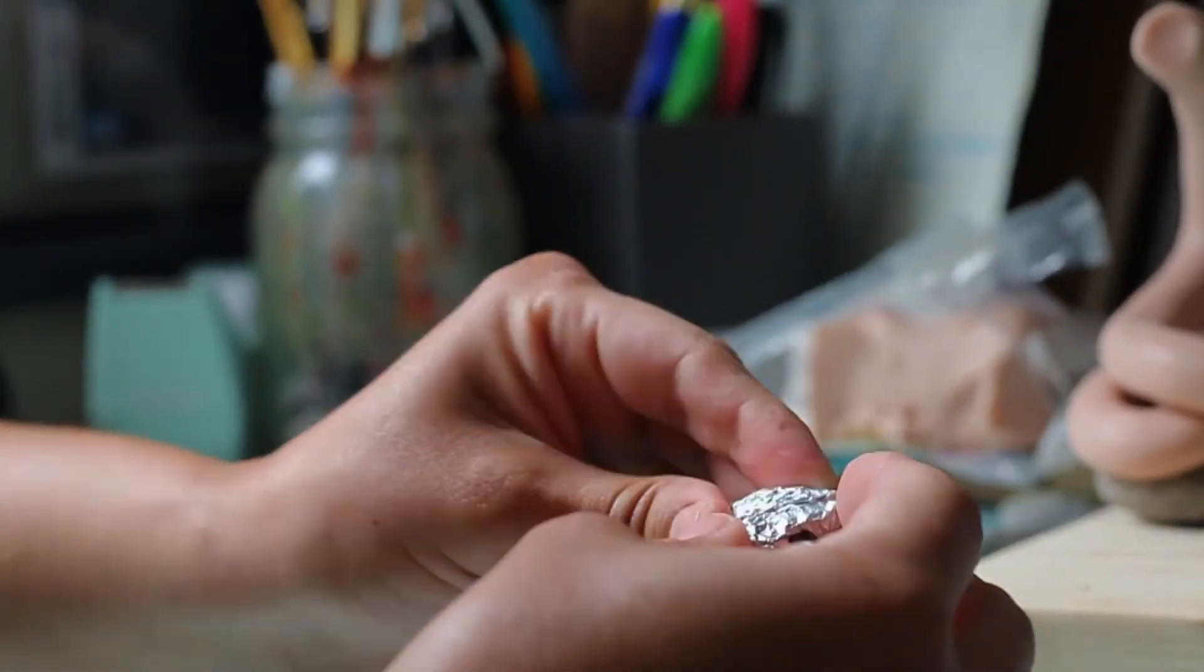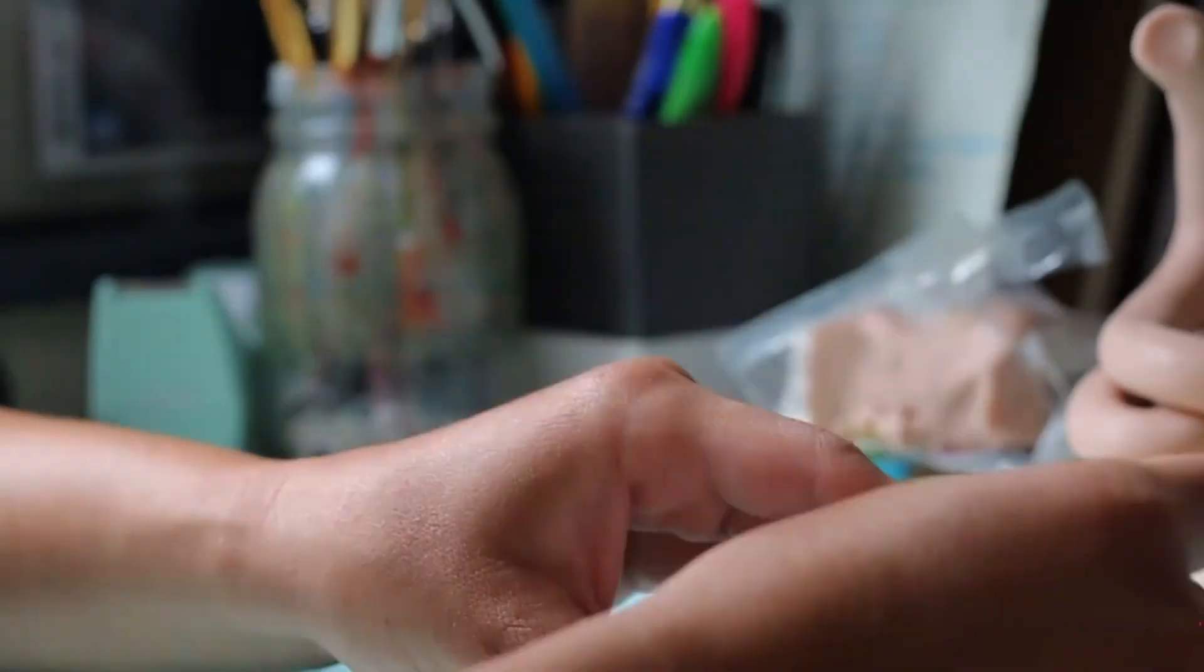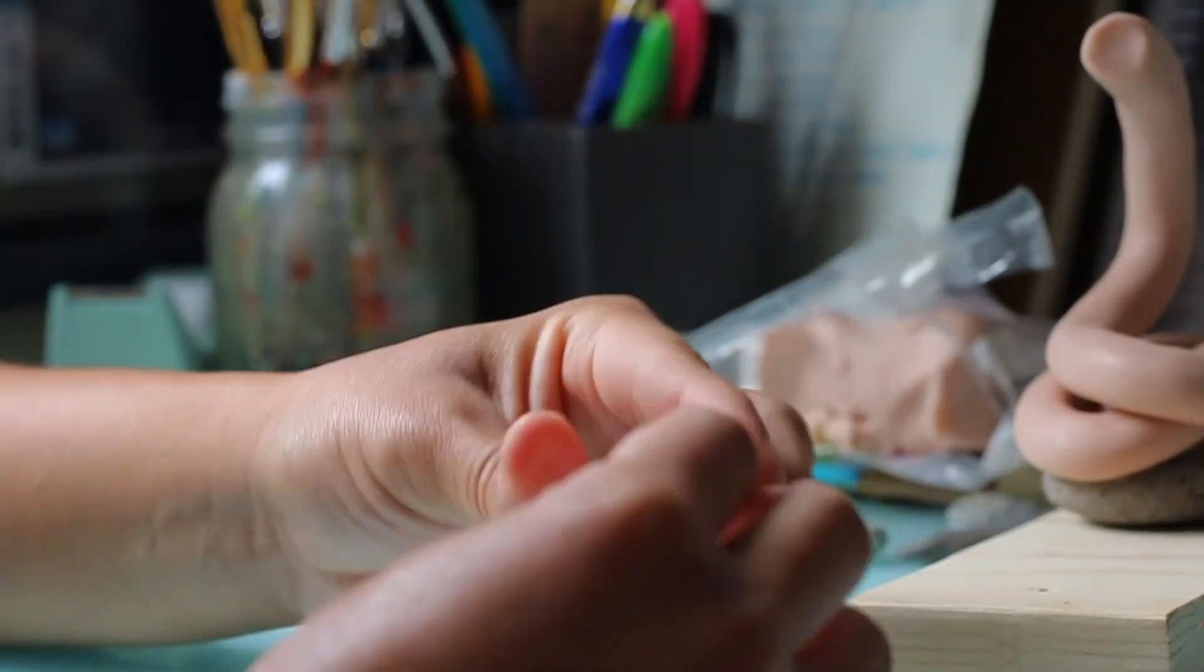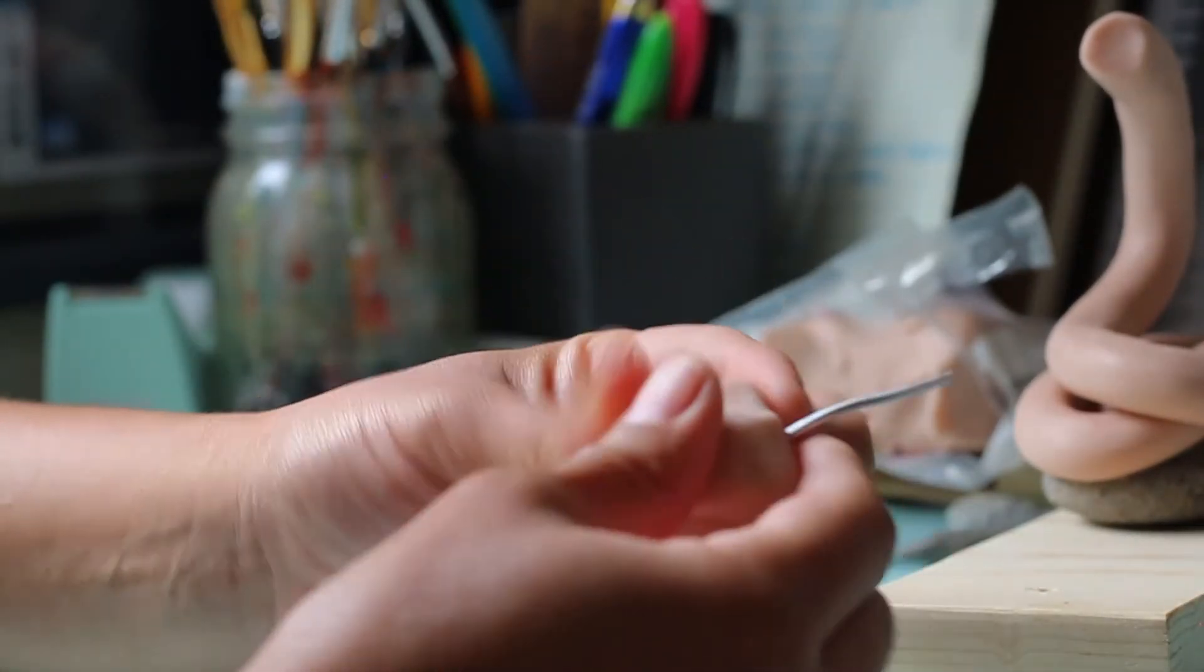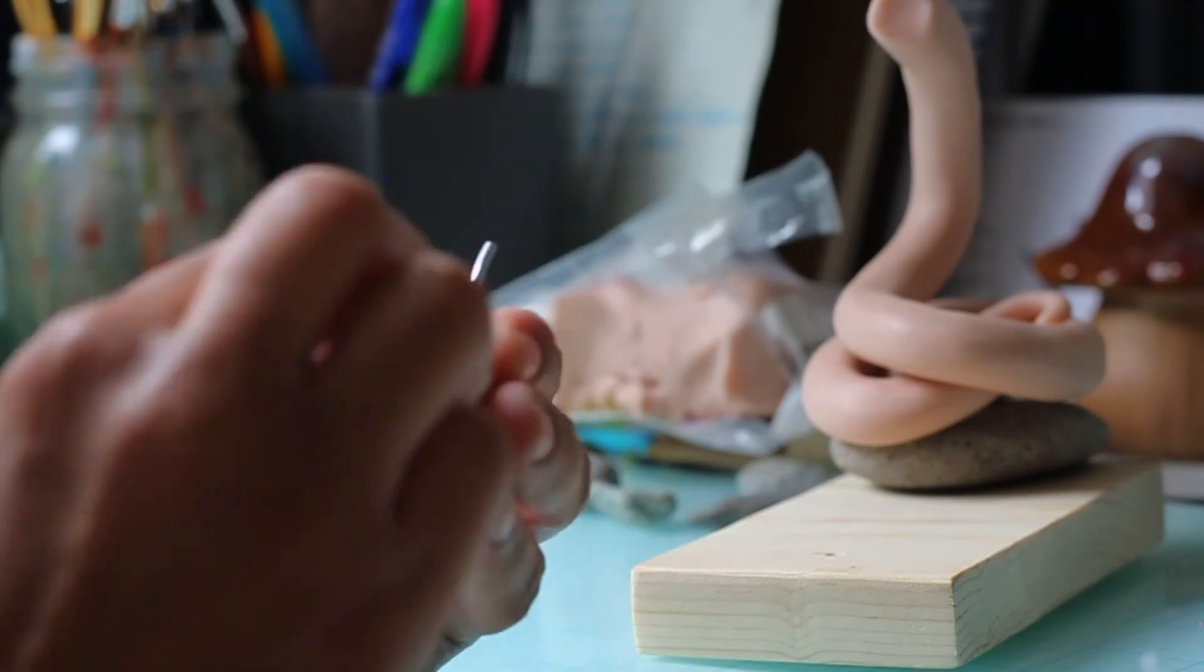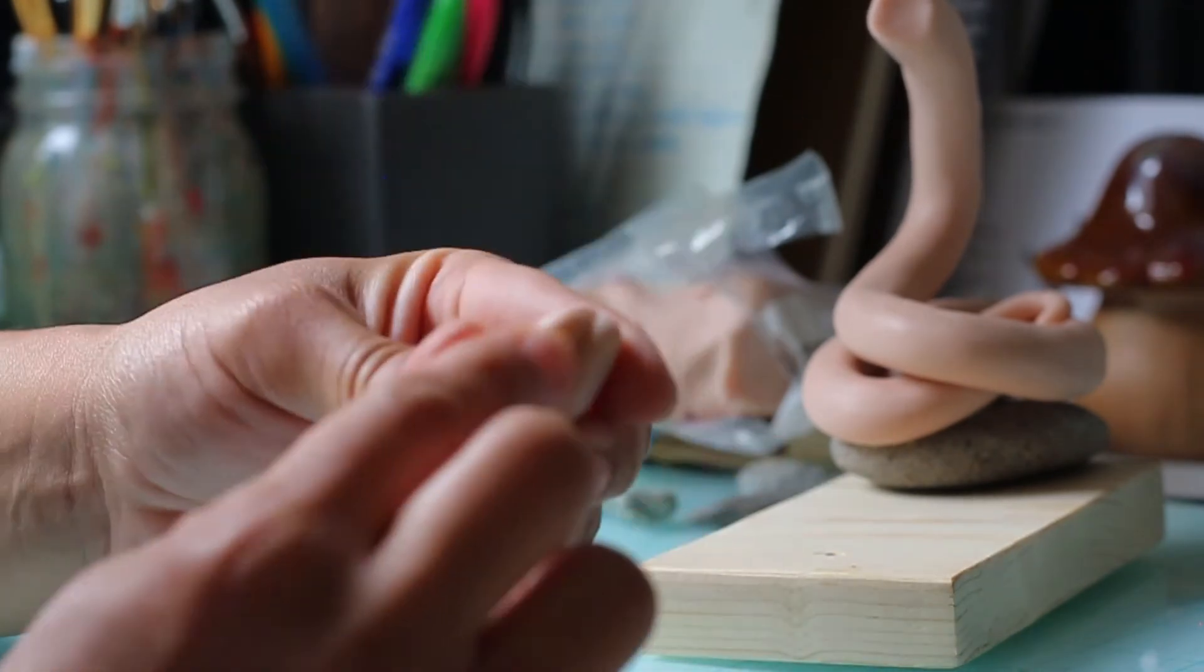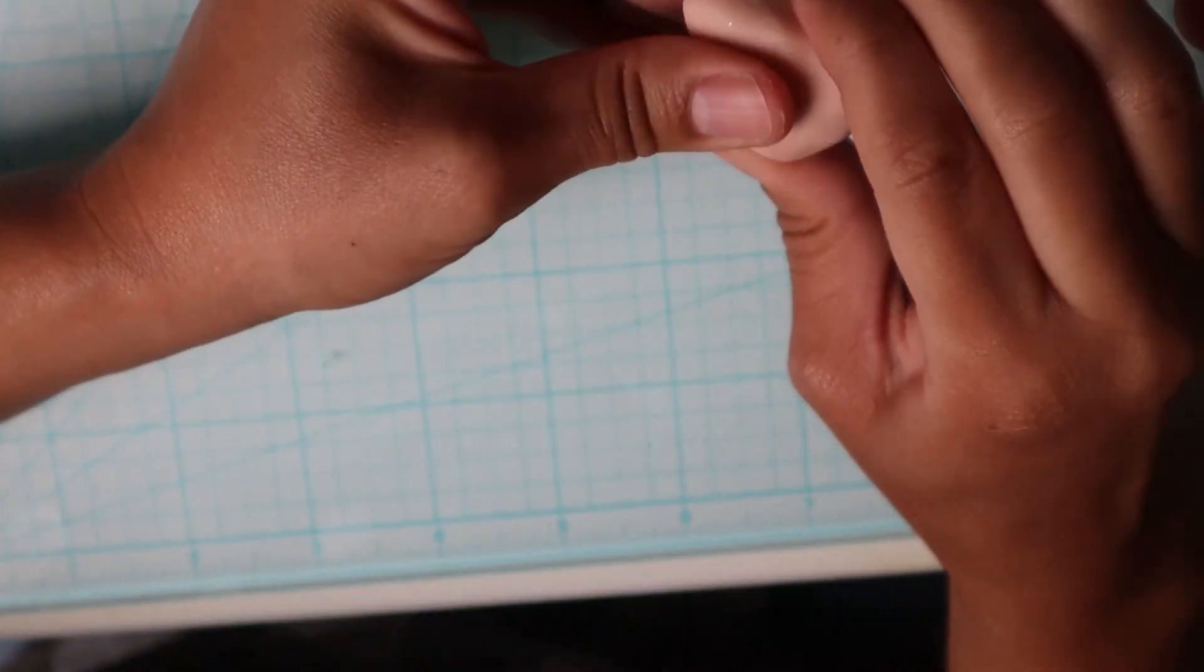Now I'm just shaping the head out of some tin foil and I'm going to stick a little wire through it so that I can attach it back to the body once I'm finished sculpting it. And then just put some thin layers of clay and build it up slowly and shape it into the shape I want the head to be.